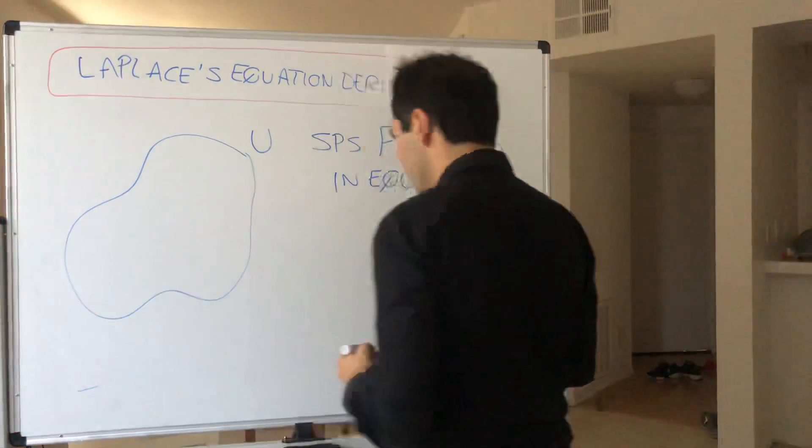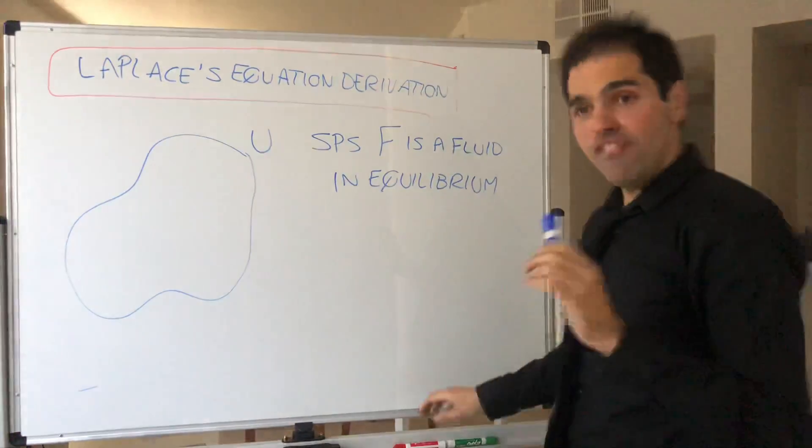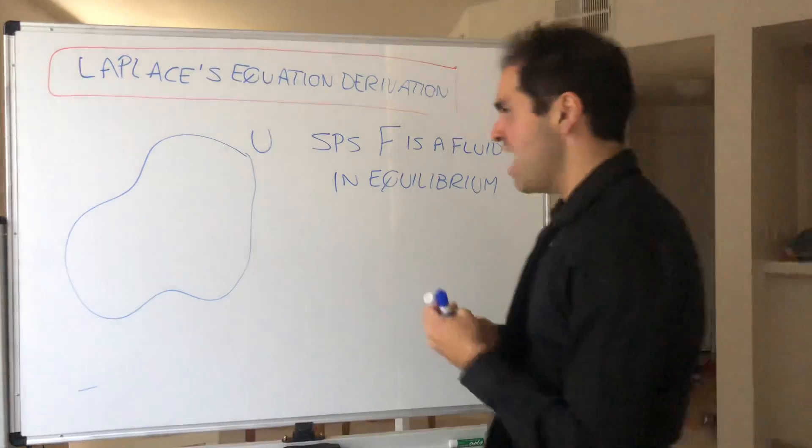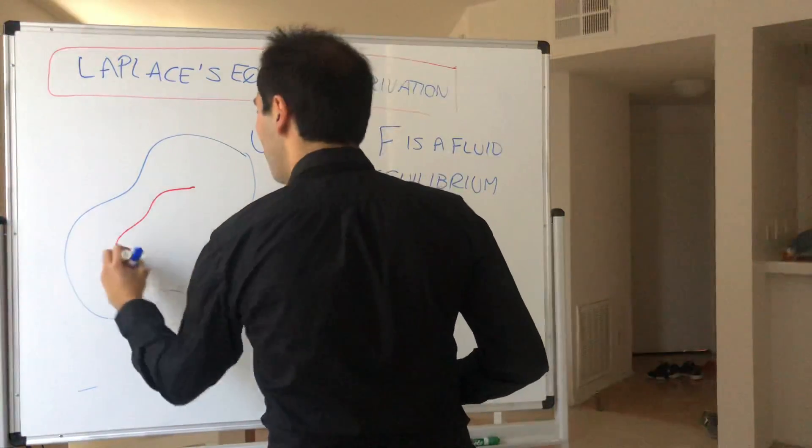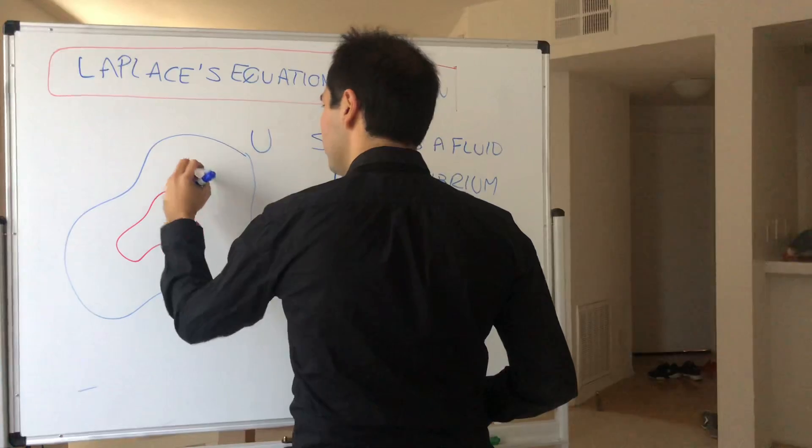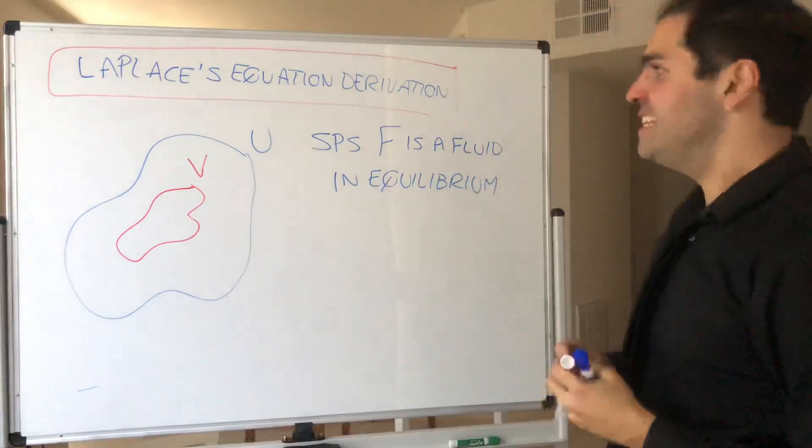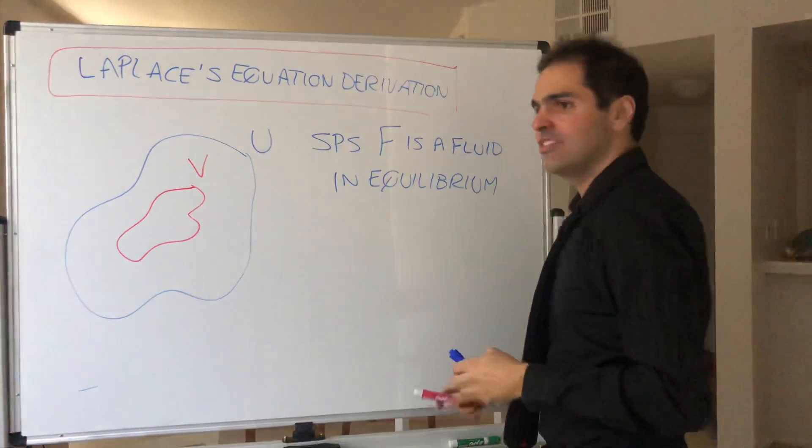And what this means is for every sub-region, so for every V that's an open bounded subset of U, we assume that the net flux of F across V is zero.